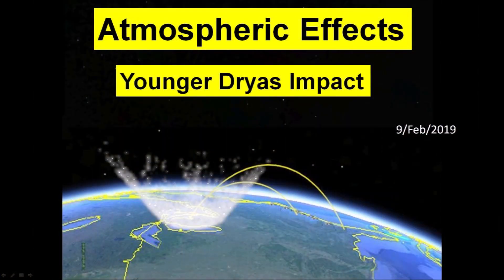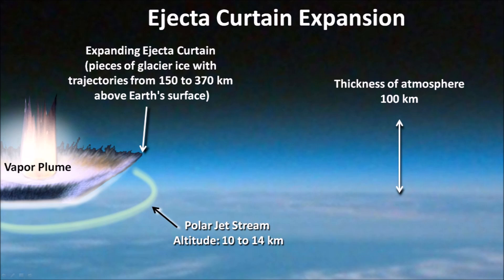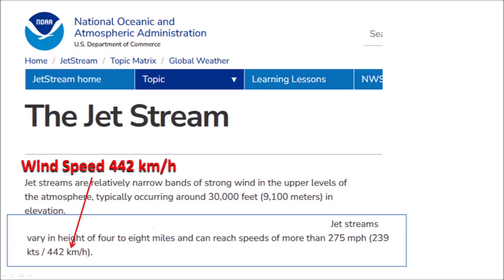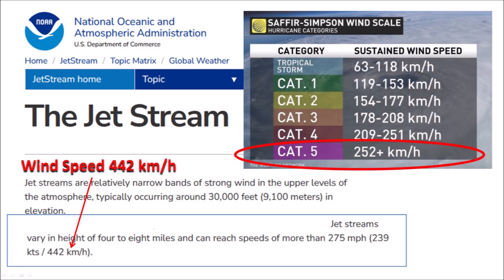Five years ago, in February of 2019, I made a video exploring the atmospheric effects of the Younger Dryas impact, which assumes that a comet impacted the Laurentide ice sheet and ejected pieces of glacier ice in ballistic trajectories. The main concept was that an expanding ejecta curtain would trap the polar jet stream and bring it to ground level during the ballistic segmentation of the ice boulders whose impacts created the Carolina Bays. According to NOAA, the wind of the jet stream can reach speeds of more than 442 kilometers per hour — almost twice as fast as a category 5 hurricane. If the jet stream was brought down to the surface during the ballistic sedimentation that produced the Carolina Bays, sand sheets, dunes, and splash chevrons would be oriented pointing downwind toward the east.